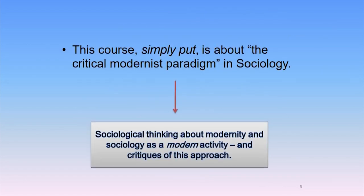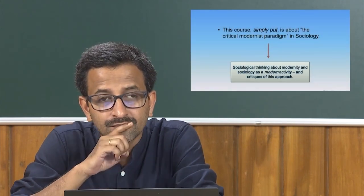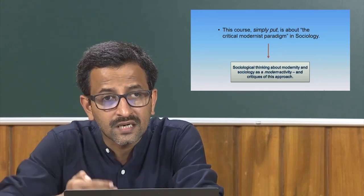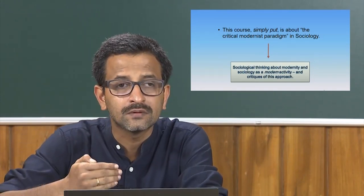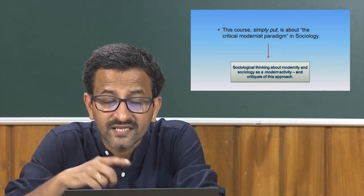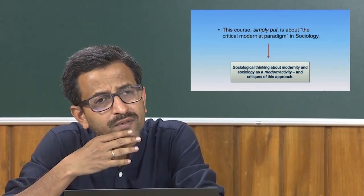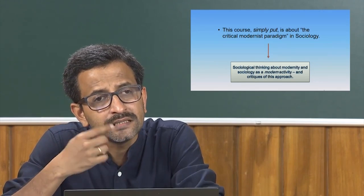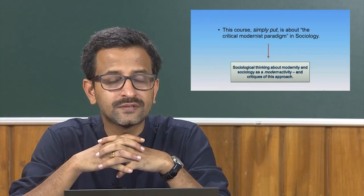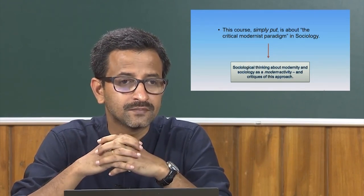Sociology emerged in a historical context — sociology as a discipline, as a theoretical construct, as a methodological device. It emerged in a specific historical context. That is why sociology is a modern activity in that sense. That historical context lies in the context of Enlightenment, the Industrial Revolution, and the French Revolution — it is in these contexts that sociology as a discipline gained momentum.